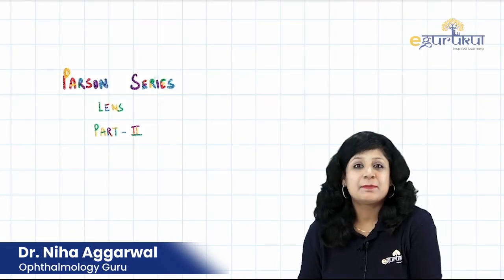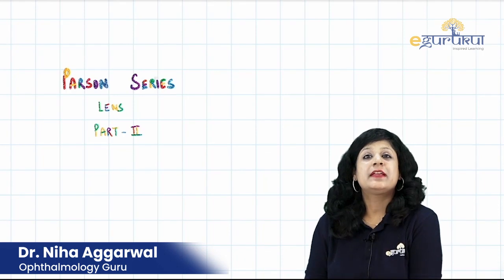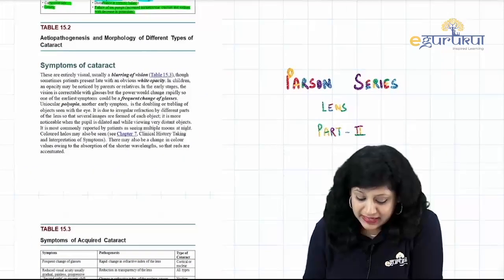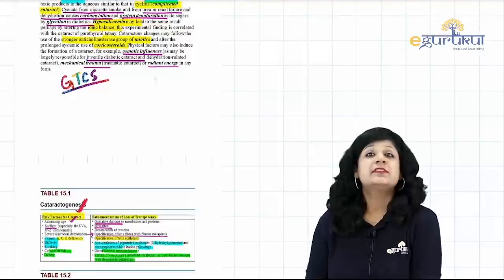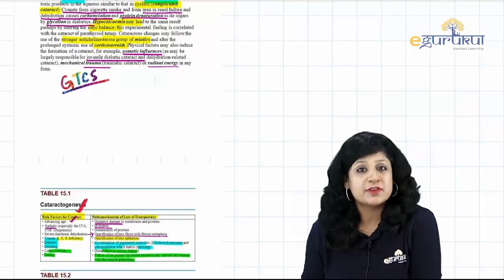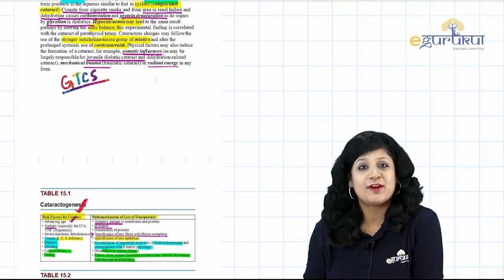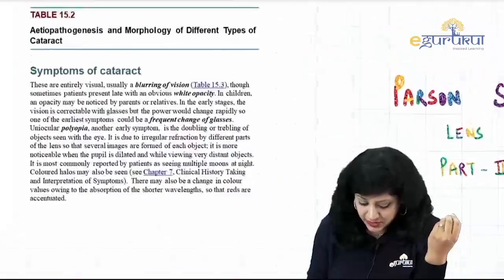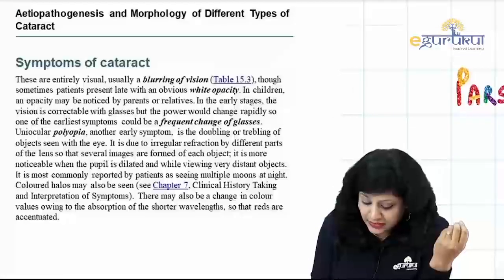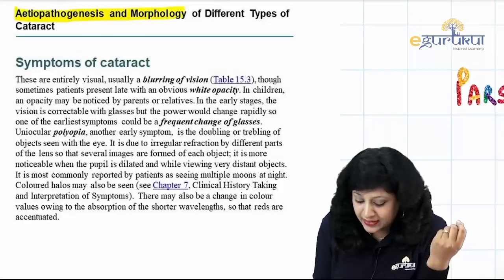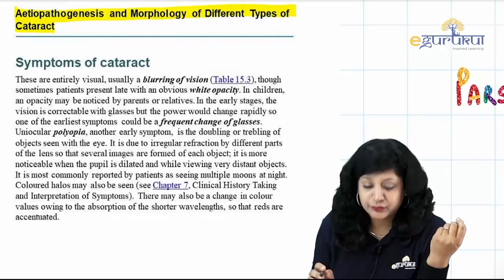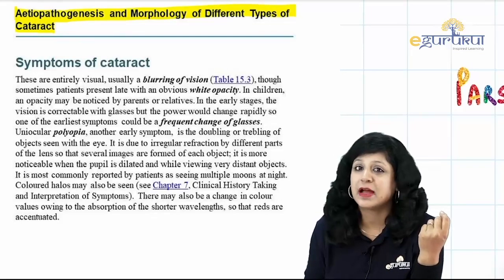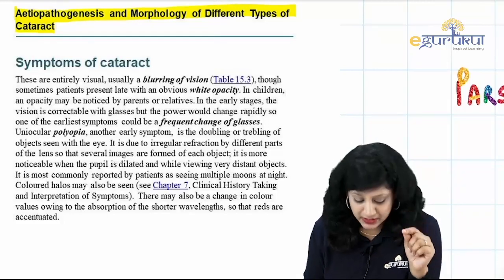Hello guys, welcome to the Parsons series. Today we will be continuing with the discussion of the lens. Last time we saw some amazing concepts about the anatomy, physiology and biochemistry of the lens and how cataract occurs. Today we are starting with the etiopathogenesis and morphology of the different types of cataract, reading Parsons latest edition, 23rd.